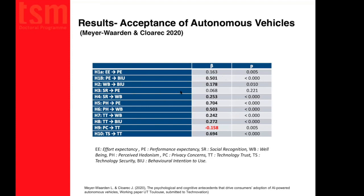Social recognition is not significant for behavioral intention, but it does increase well-being. Perceived hedonism increases performance expectancy — the benefits perceived — and also increases well-being, highly positively and significantly. Trust increases well-being and behavioral intention of use. Privacy concerns decrease trust, and technology security increases trust. We confirmed that most links are confirmed and shown in the literature.